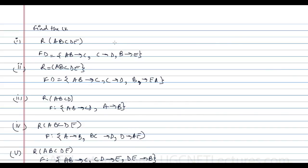For relation R(A,B,C,D,E) with five attributes, the shortcut is to check the right-hand side of every functional dependency and find attributes not present there. You can clearly see C, D, and E are present on the right-hand side, but A and B are not present. So let us take the AB closure.